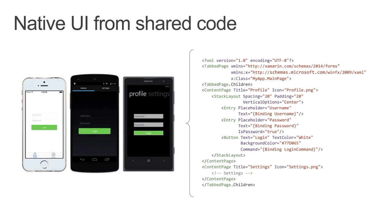Here we can see an example of a login page built with Xamarin Forms. On the right-hand side is the XAML markup — if you're used to Windows XAML, this looks very familiar. You can see data binding within the entries and commands on the button. This XAML lives in the shared project or PCL and produces a native UI for three platforms. The apps look and feel native because they are native, using all native controls and paradigms.